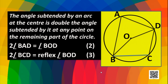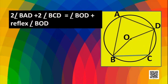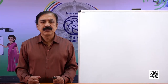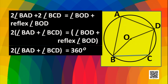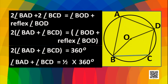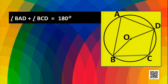Adding these two equations: 2 × angle BAD + 2 × angle BCD = angle BOD + reflex angle BOD. We know the sum of the angle and its reflex is 360 degrees. Taking 2 as a common factor on the left side: 2(angle BAD + angle BCD) = 360°. Dividing both sides by 2, angle BAD + angle BCD = 180°. So we proved that opposite angles A and C are supplementary — their sum is 180 degrees.